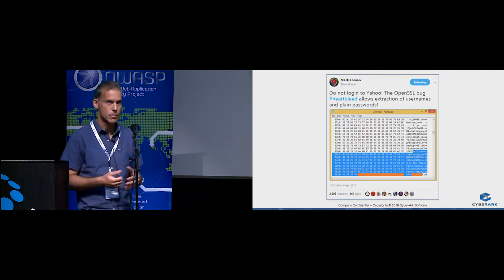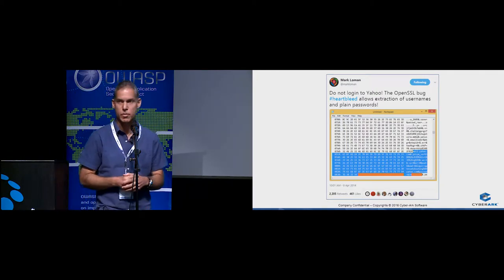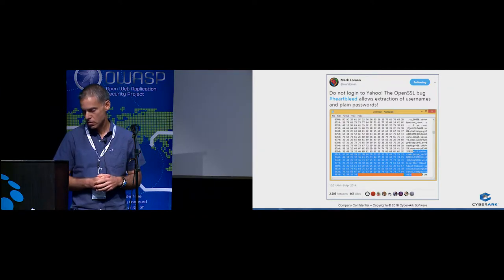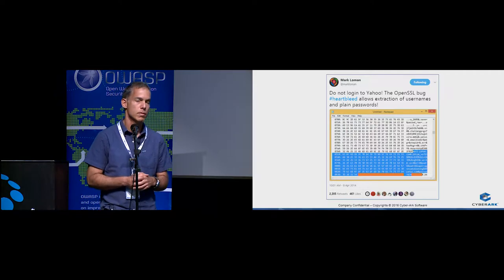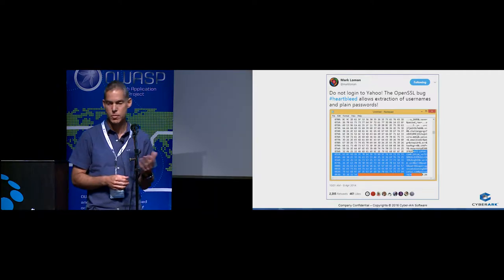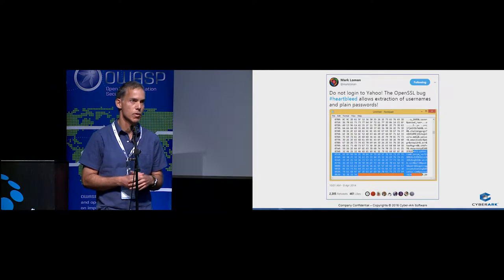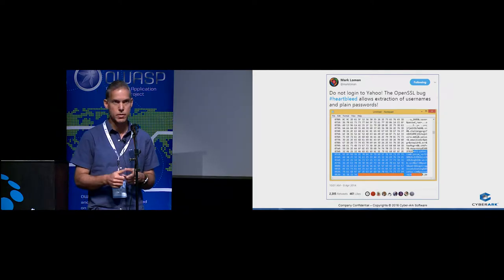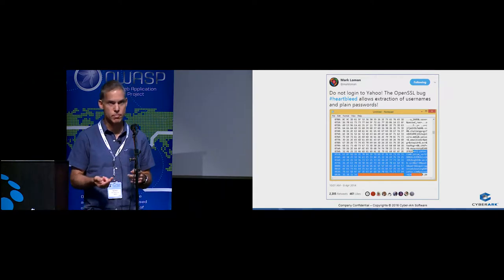This is how it looked the day after the disclosure. Someone checked a Yahoo server and you can immediately see that you can retrieve all the secrets from Yahoo's servers. It's not only Yahoo — about 70, sometimes people say 80%, of the servers on the internet were exposed to Heartbleed for two and a half years. Google, Yahoo, Facebook, banks — you name it.